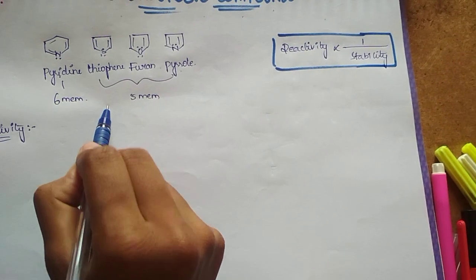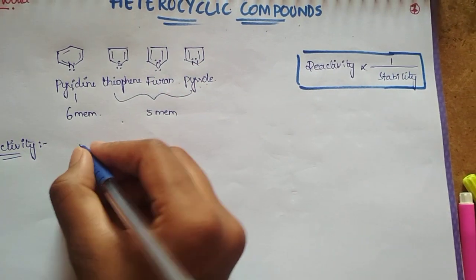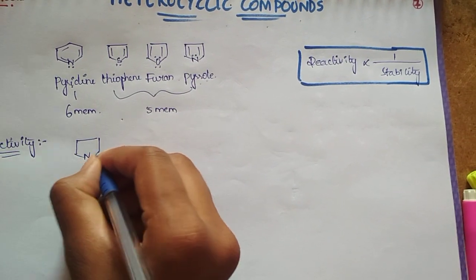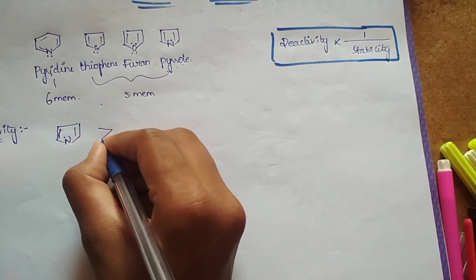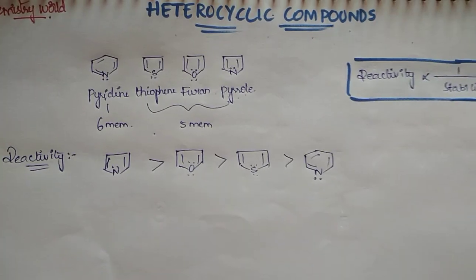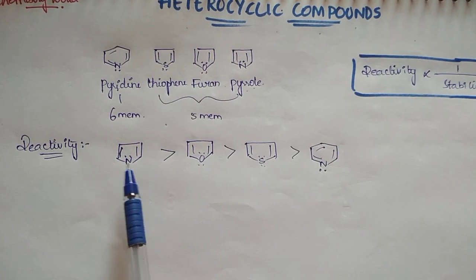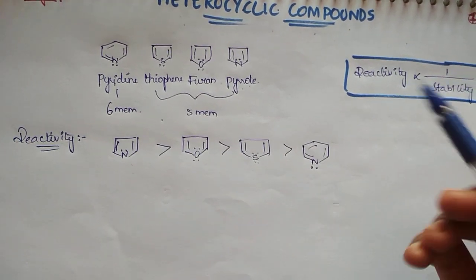So which is more reactive? Pyrrole is more reactive. This is the order: first is pyrrole, next furan, next thiophene, and next pyridine.